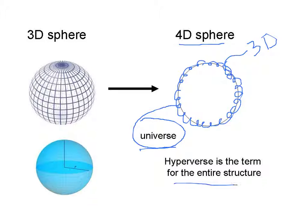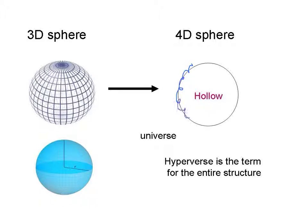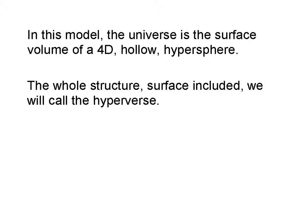So the universe is the three-dimensional surface volume of our four-dimensional sphere. The term we're going to use for the entire structure is hyperverse. We will refer to this entire thing here as the hyperverse, and the surface as the universe. So again, the surface of the hyperverse is the universe. And importantly, the center of the hyperverse is hollow.